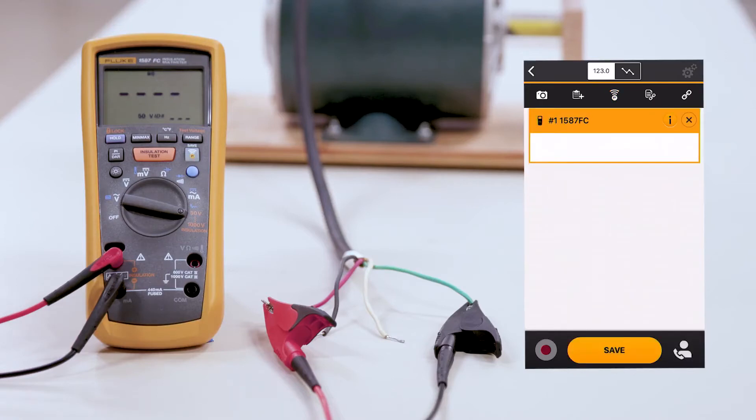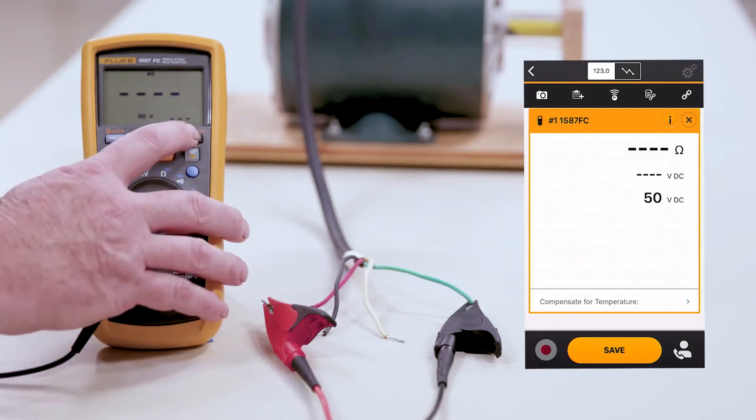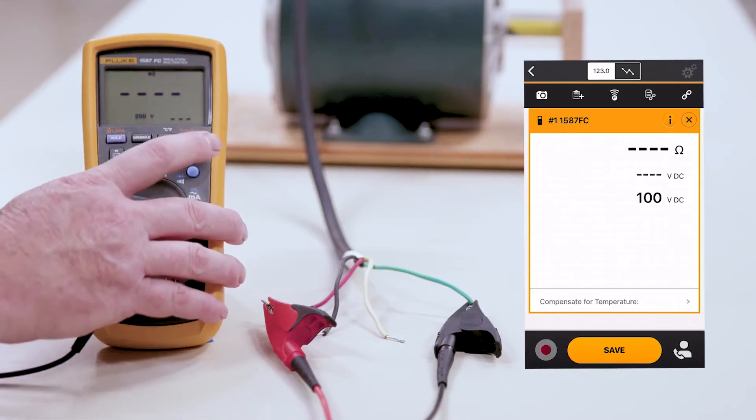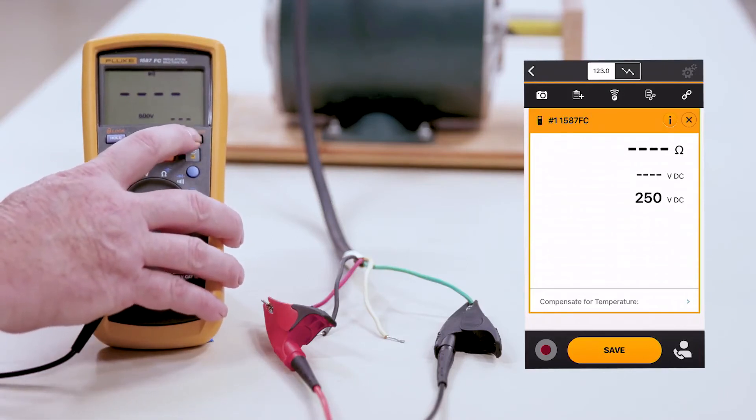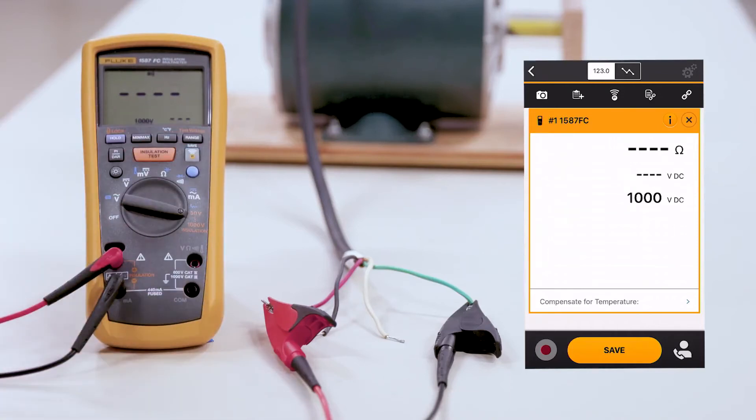Typically in an insulation test, we want to double the value of whatever the rating is for voltage. In this case, this motor is a 480 volt motor. We're going to change the range of our insulation meter to 1000 volts. By doing that, you'll hit the range button.